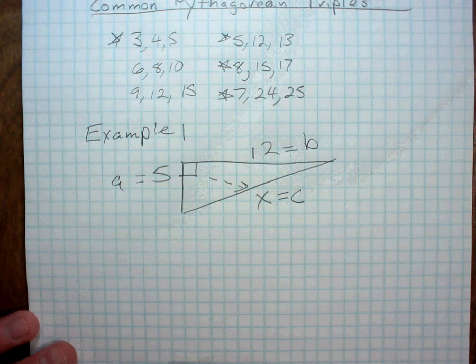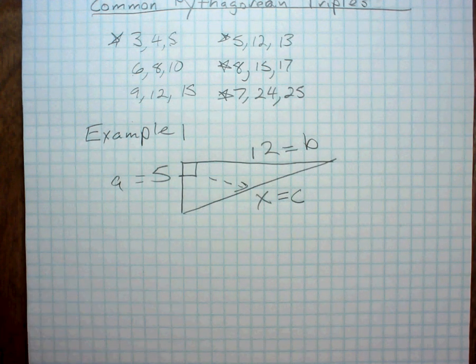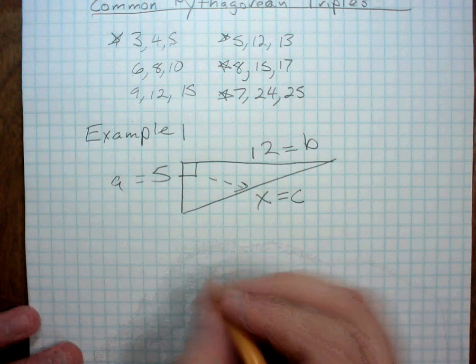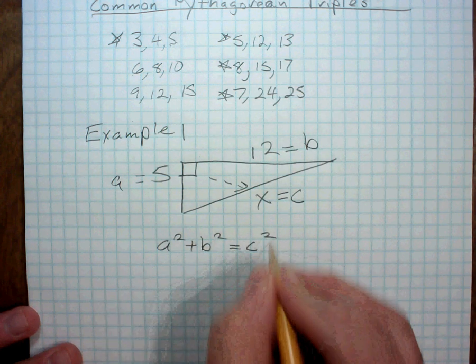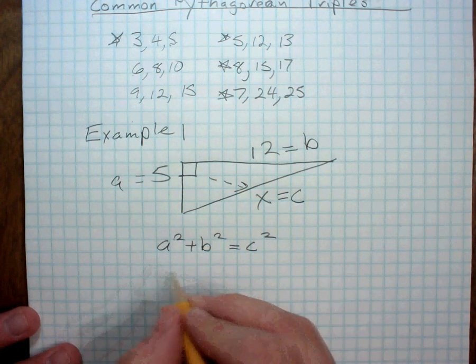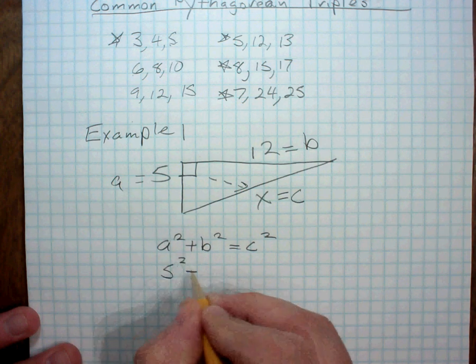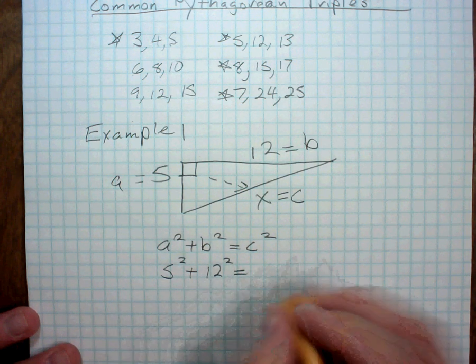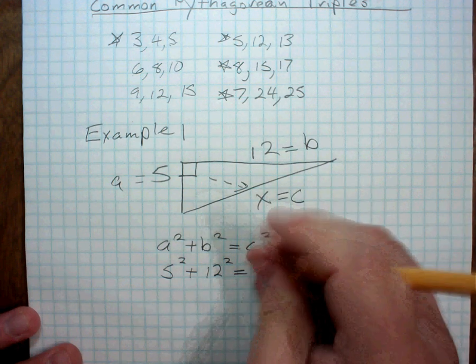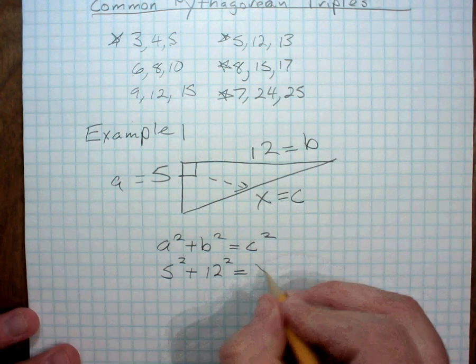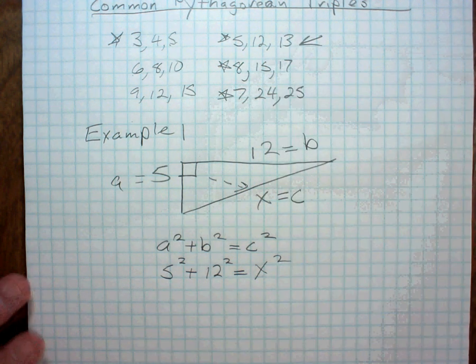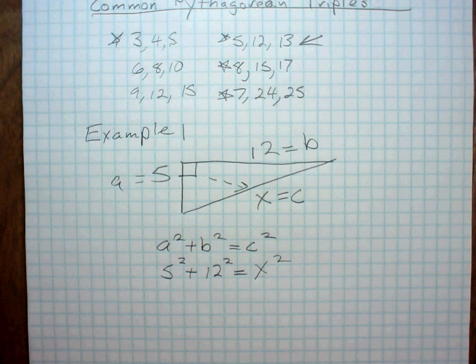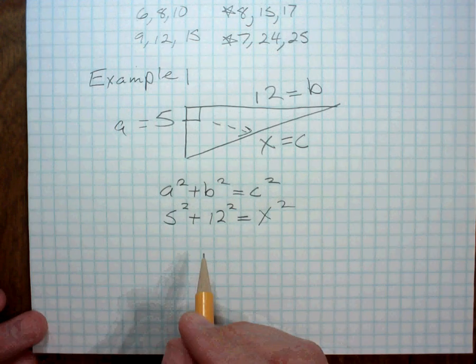Okay? So then to solve for C, what I would need to do is I just plug that into the Pythagorean theorem and then solve for C. So I would say A squared plus B squared equals C squared. In other words, I'd say 5 squared plus 12 squared equals C squared, or actually we could say X squared. Okay? Now I know that this is the triple, so my answer should probably be 13, but we're going to crank through the math anyways and see what we get.